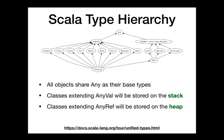That splits into two major categories: AnyVal, which are values that go on the stack, and AnyRef, which are values that go on the heap — these objects will be created, stored on the heap, and passed by reference. Anything that moves around by reference extends AnyRef, which includes every single class that you'll create. Every type we create is going to be in AnyRef. Our classes implicitly extend AnyRef if we don't extend anything explicitly, and that gives us that reference behavior.